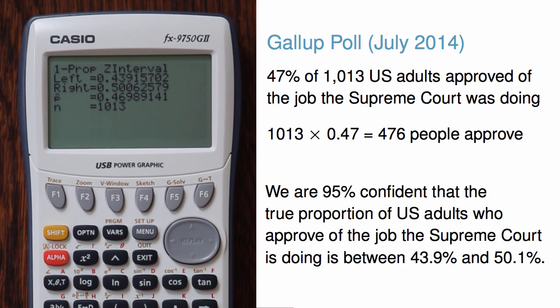So now we can write that we are 95% confident that the true proportion of US adults who approve of the job the Supreme Court is doing is between 43.9% and 50.1%.